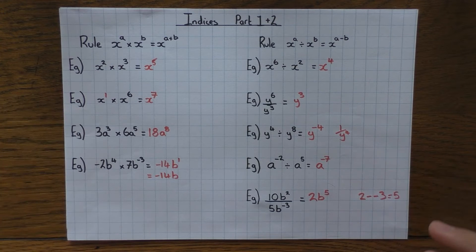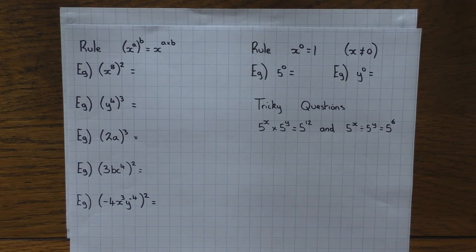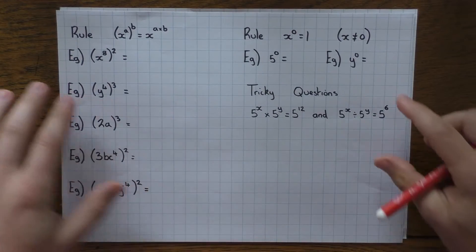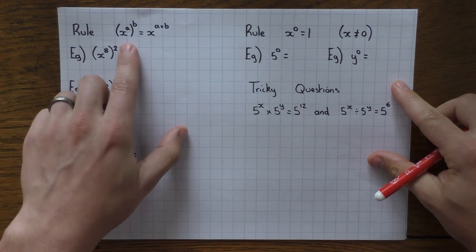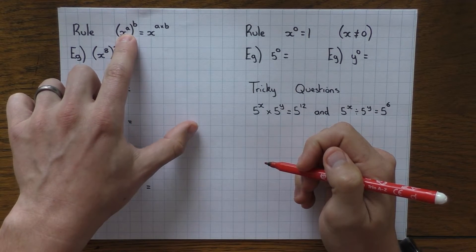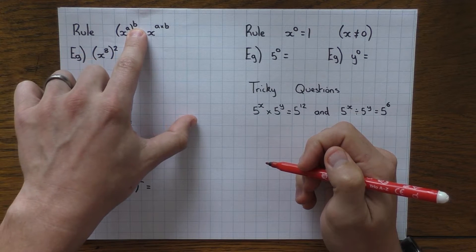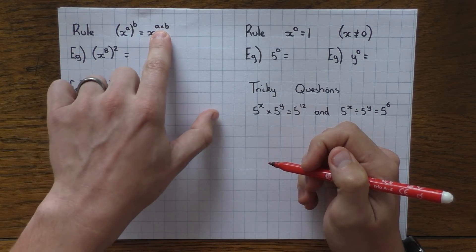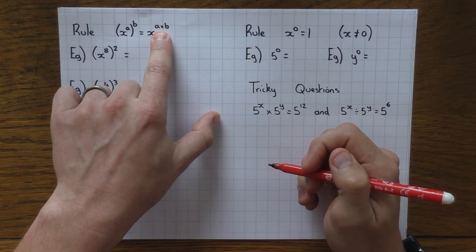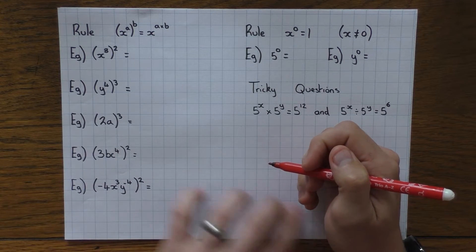So there are the first two rules — that's part one done. The next rule: if you have x to the power of a, which is then to the power of b, you multiply the powers. Let's look at some examples to clear that rule up.